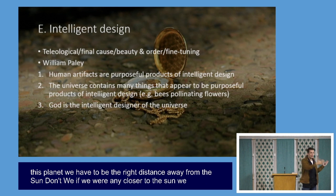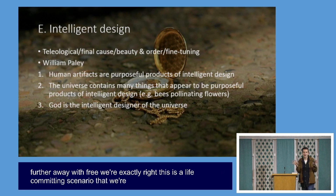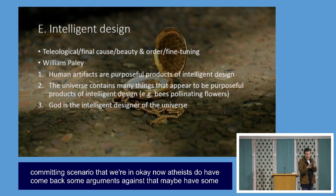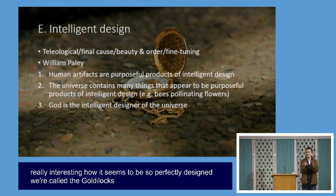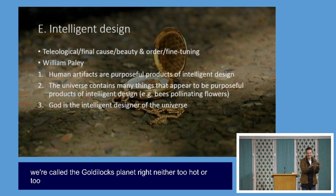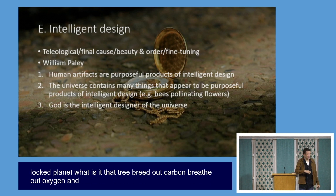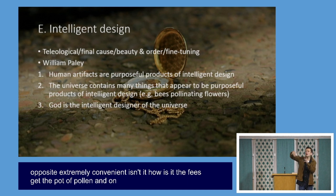Paley said clearly there must be a designer, because if you look at the universe everything has a designed function. All the constants of the universe — the strong nuclear force, weak nuclear force, electromagnetism, gravity — have to be calibrated exactly right for life to be permissible. We have to be the right distance from the sun; any closer we'd boil, any further we'd freeze. We're exactly right. We're called the Goldilocks planet — neither too hot nor too cold.